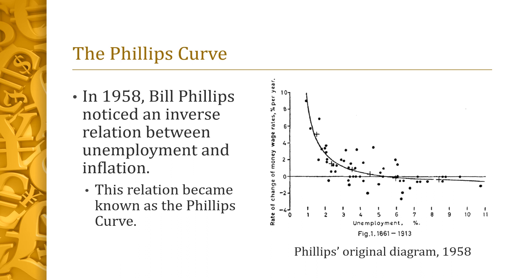New Zealand economist Bill Phillips was the first to notice the relation between unemployment and inflation. The slide depicts Phillips' original diagram from his 1958 paper. Unemployment appears on the horizontal axis, while wage inflation appears on the vertical axis. Years that had low unemployment tended to have high inflation, and years with high unemployment had low inflation. This inverse relation between unemployment and inflation became known as the Phillips curve.